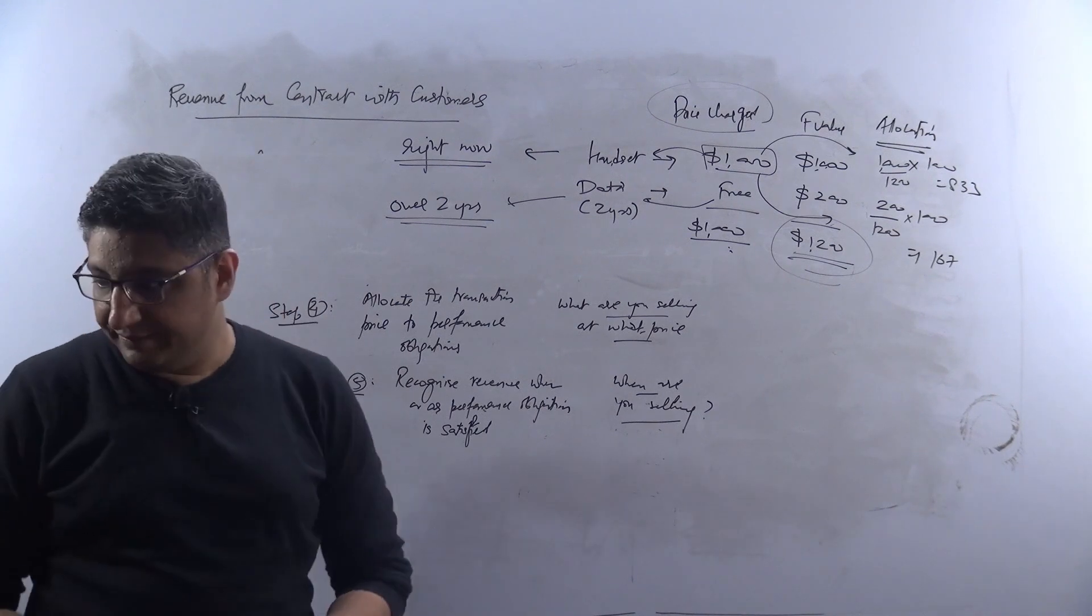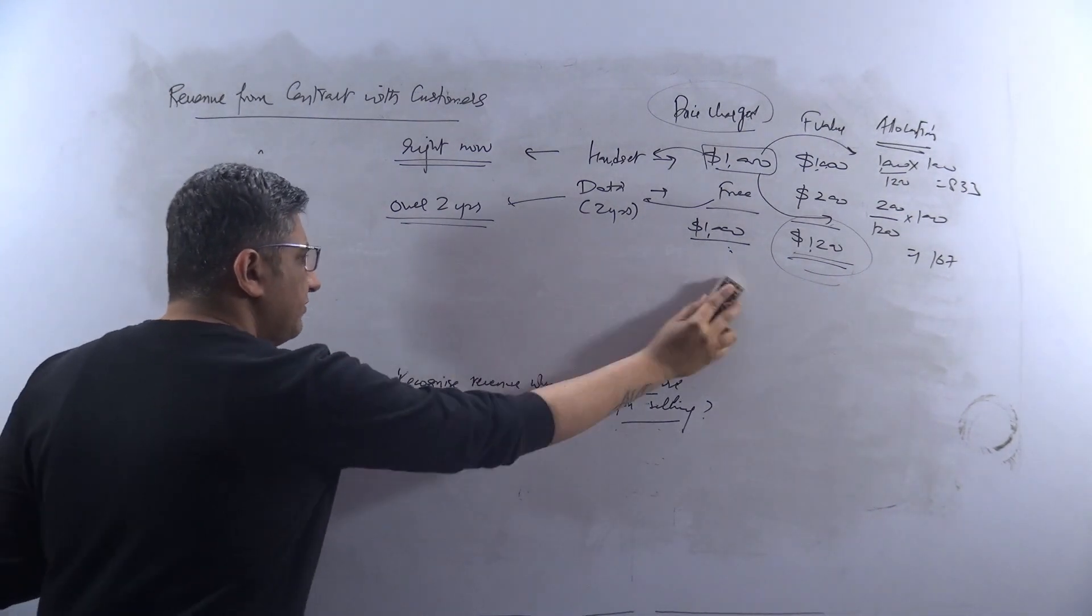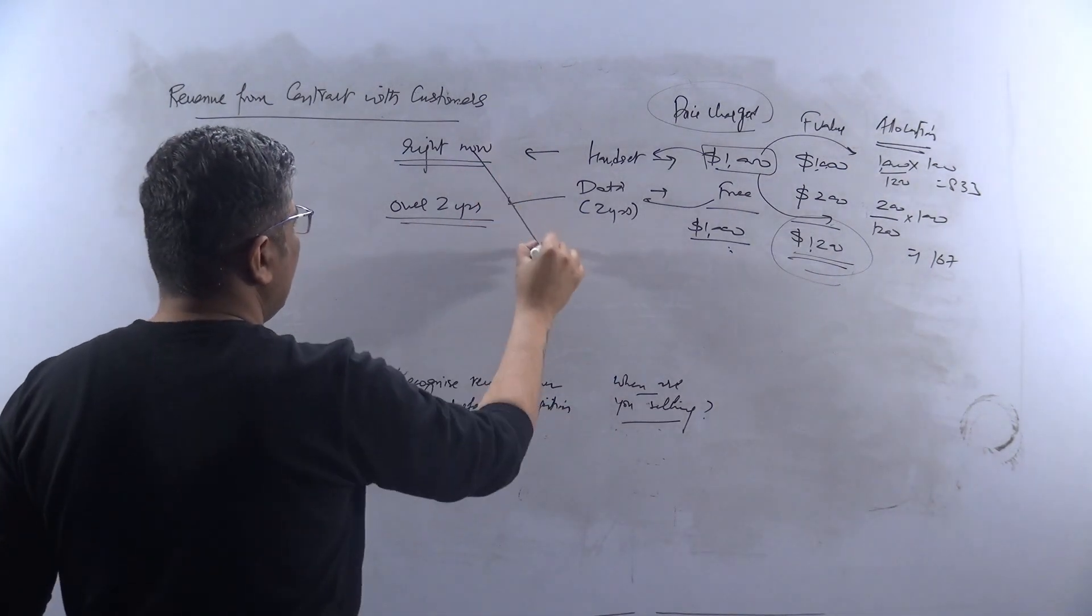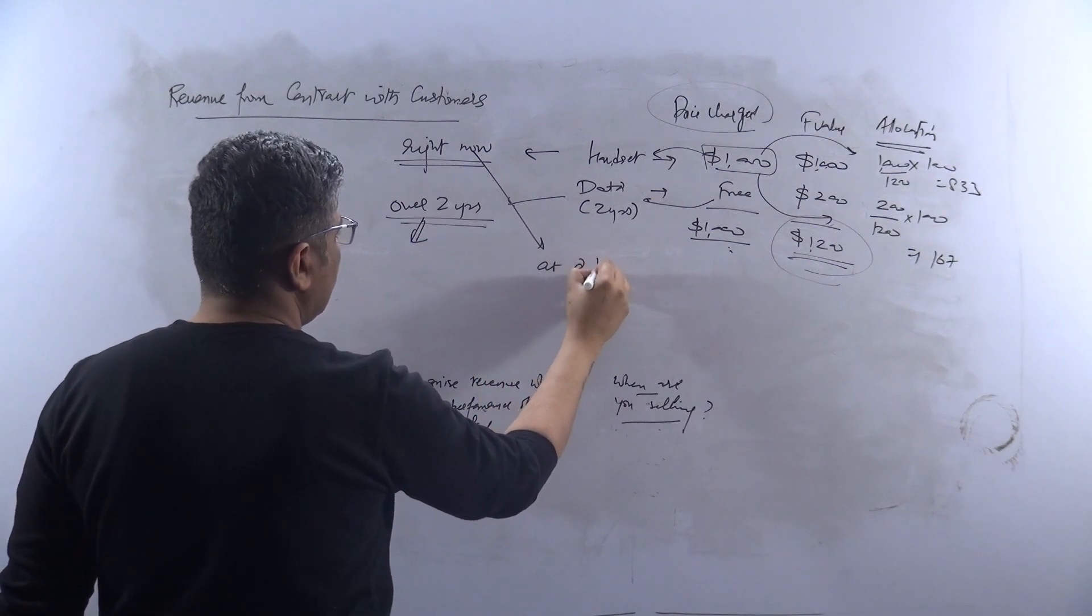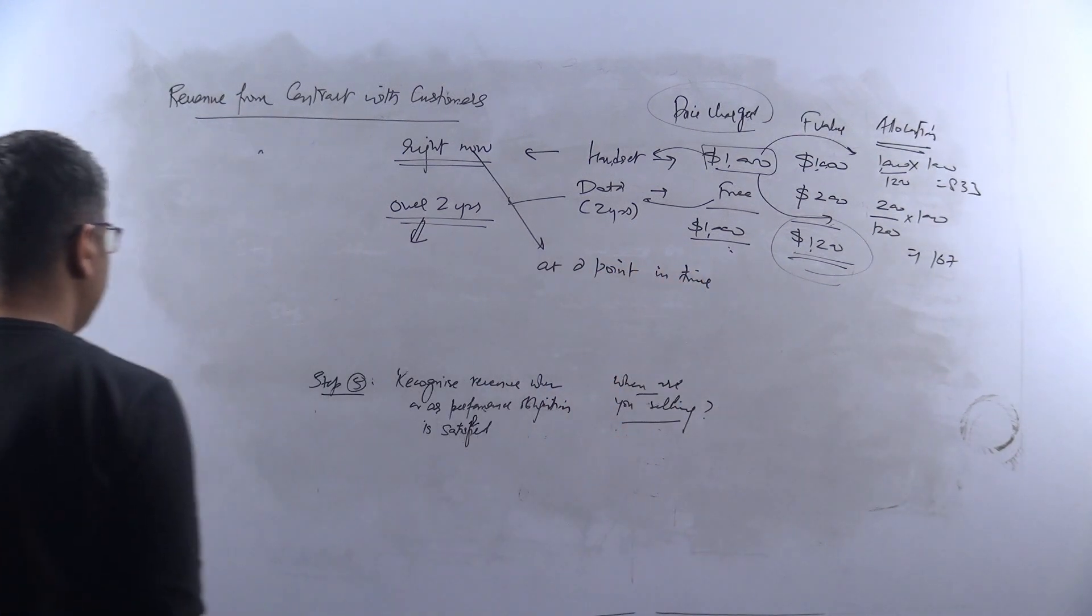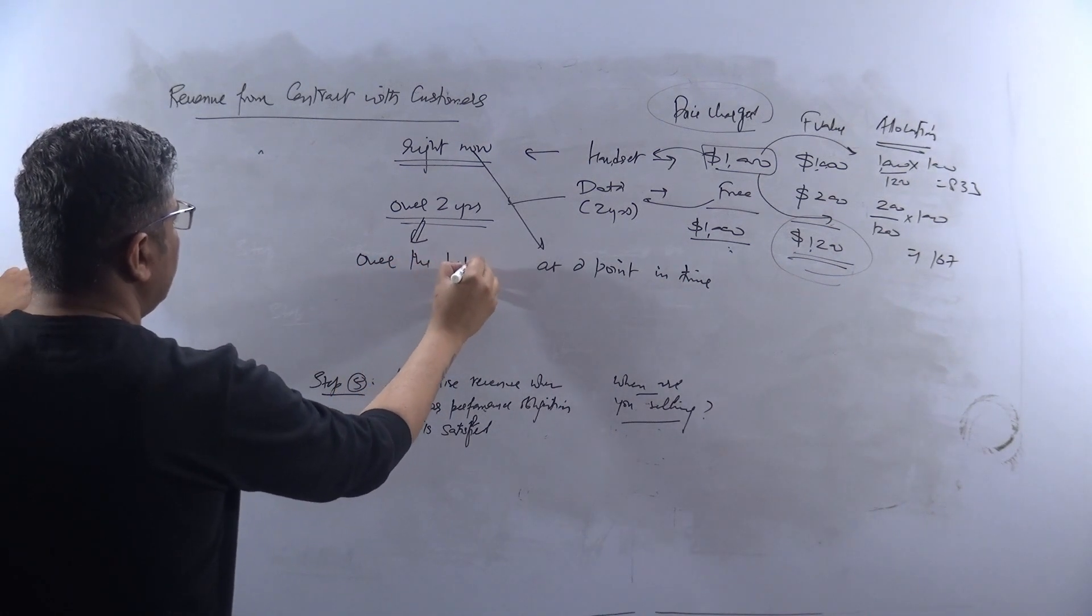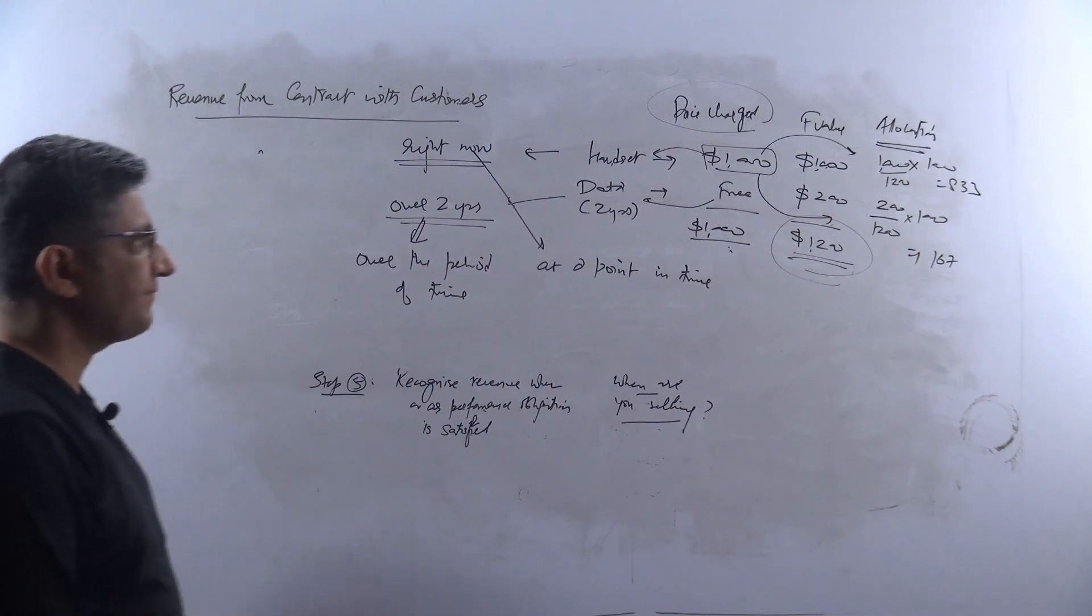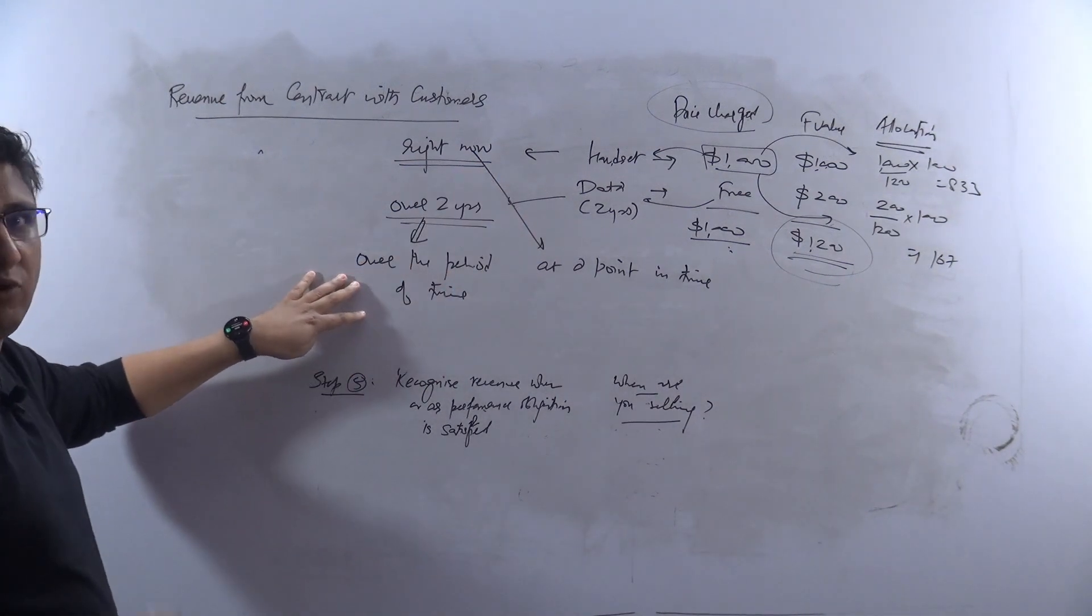And finally, in this instance, even step 5 or the fifth question is also answered. When are you selling? Are you selling it right now or are you selling it over two years? Are you selling it at a point in time or over the period of time? At a point in time just now, or over a period of time. Over the period, you recognize revenue.